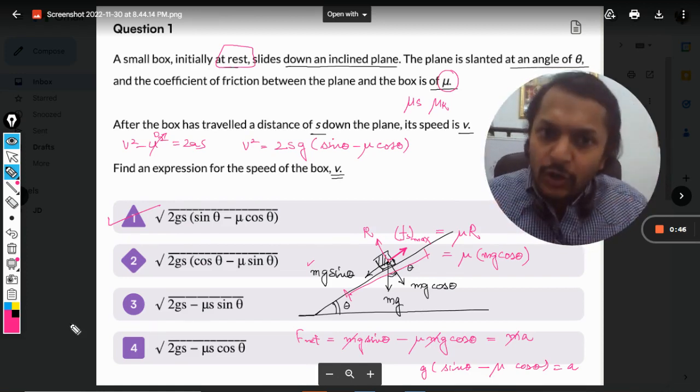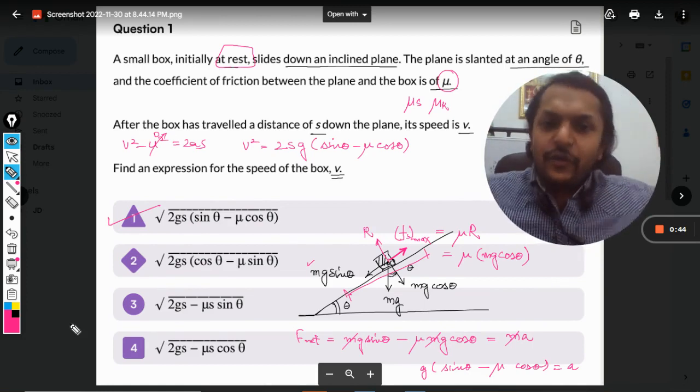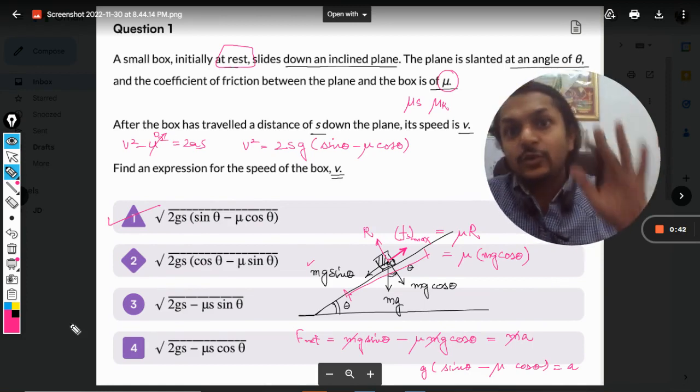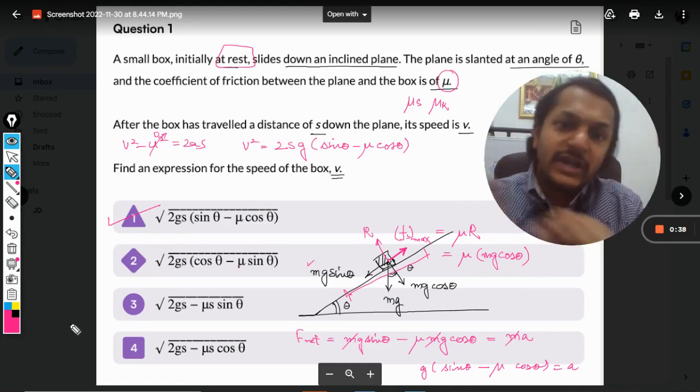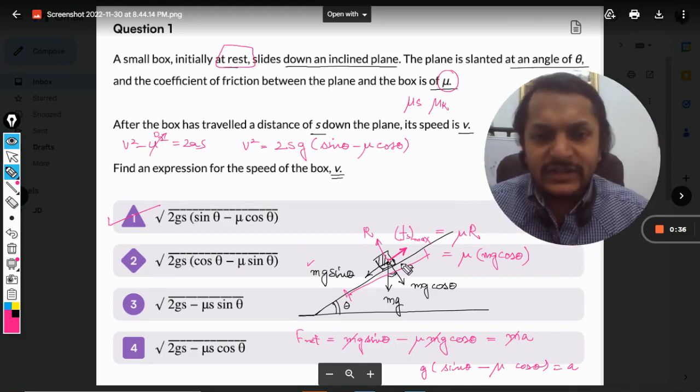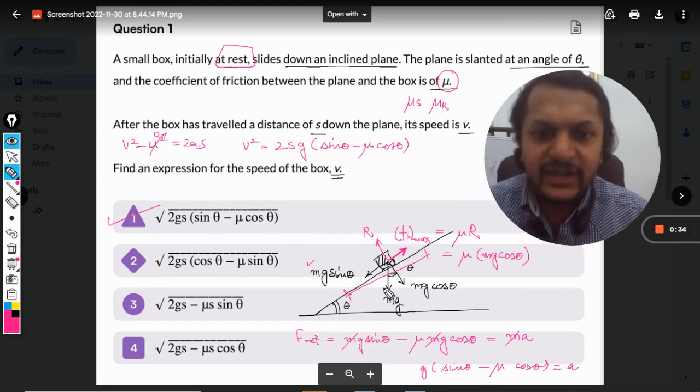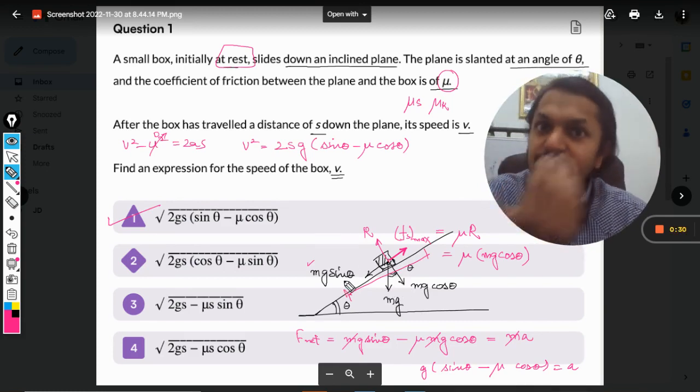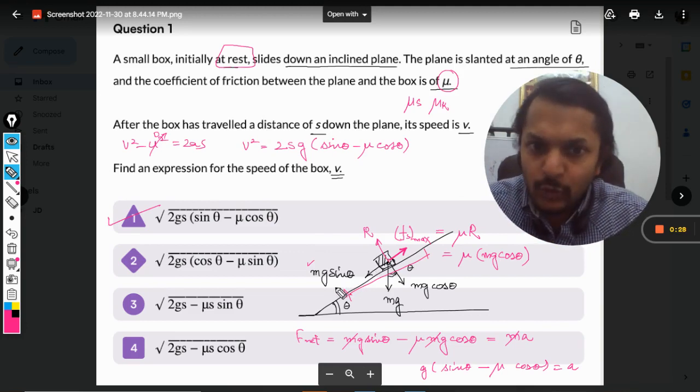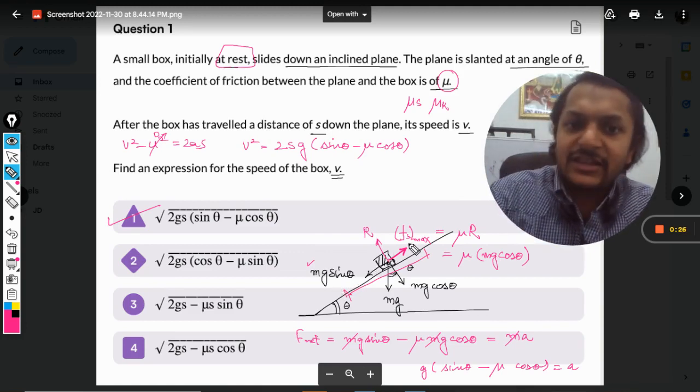There are so many concepts involved in this question, which is why it's very important. You need to see the video again to understand it properly. What is happening is this is the body, this is the weight, and weight has been divided into two components. One component is pulling the mass downwards and there is friction.